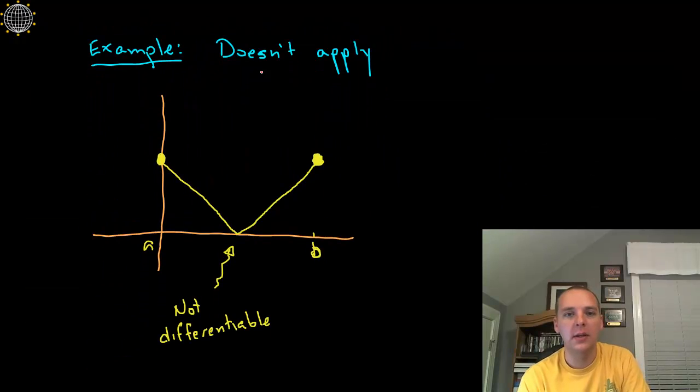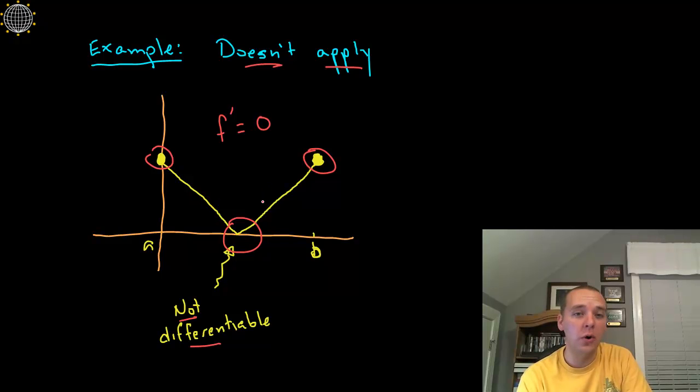Here again Rolle's Theorem doesn't apply. How come, why not? Well, f(a) does equal f(b), it is continuous, there's no breaks in the graph or anything like that, but do you see why it's not applicable here? Well right here in the open interval (a,b) is not differentiable - there's that sharp corner. So you can see that would have been the place if it was smooth that would have been the place where the derivative is zero, but because that was a corner instead, there is no such place. Rolle's Theorem is not applicable.